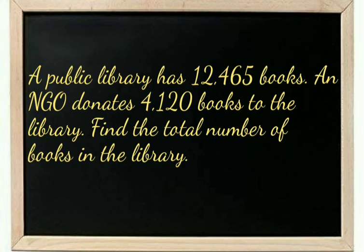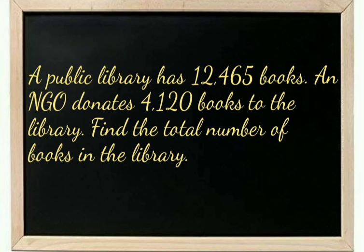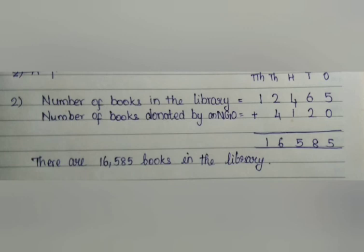Second question: a public library has 12,465 books. An NGO donates 4,120 books to the library. What is the total number of books in the library? The important numbers are 12,465 and 4,120 and the keyword is 'total'. We add the books already in the library and the books donated by the NGO. So there are 16,585 books totally in the library.